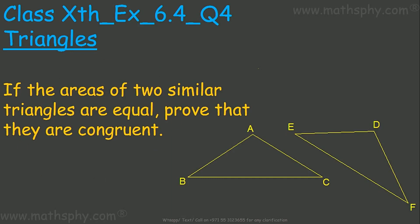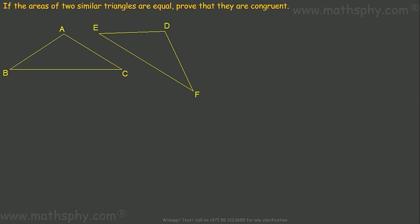This question says: if the areas of two similar triangles are equal, given triangle ABC is similar to triangle DEF and the area of triangle ABC is equal to the area of triangle DEF, what we have to prove is that triangle ABC is congruent to triangle DEF.